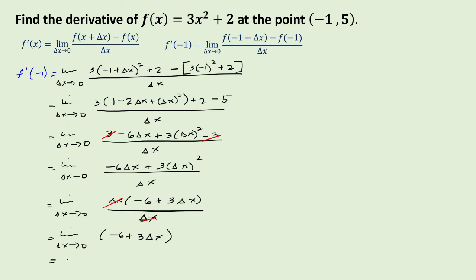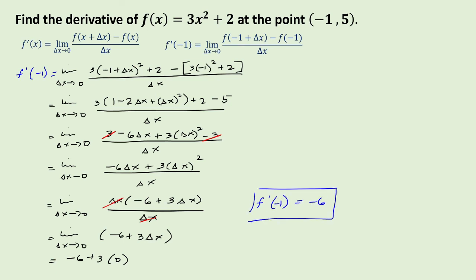We have the limit of (negative 6 plus 3 delta x) as delta x approaches 0. Substituting 0 for delta x gives negative 6 plus 3 times 0. Therefore, f prime of negative 1 equals negative 6, meaning the slope of the given function at x equals negative 1 is negative 6.